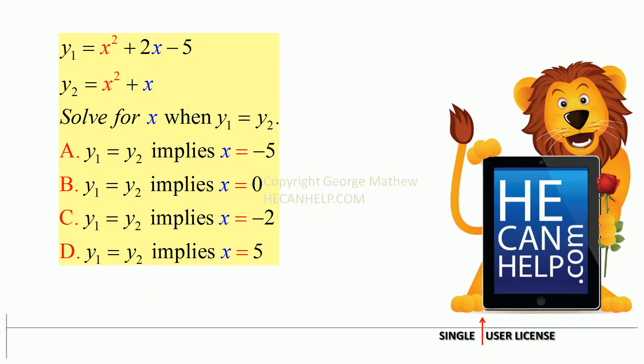y1 is equal to x squared plus 2x minus 5. y2 is equal to x squared plus x. Solve for x when y1 is equal to y2.